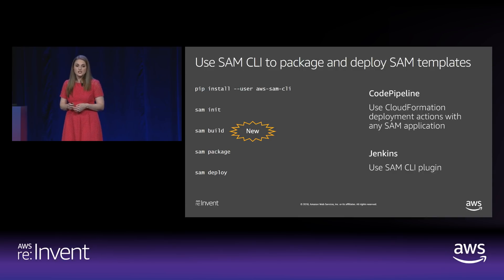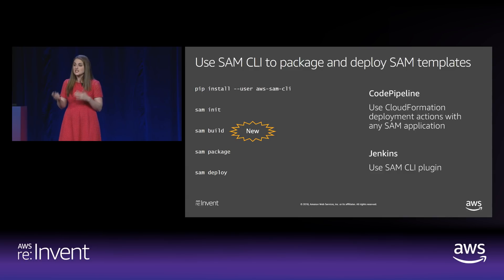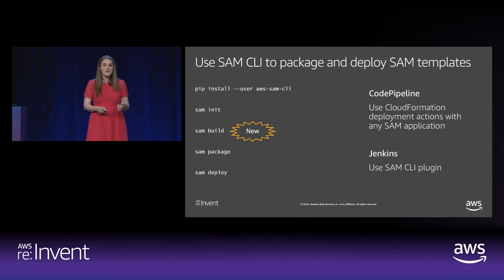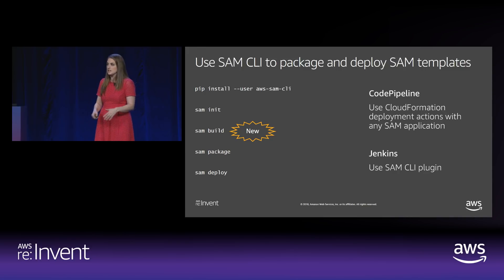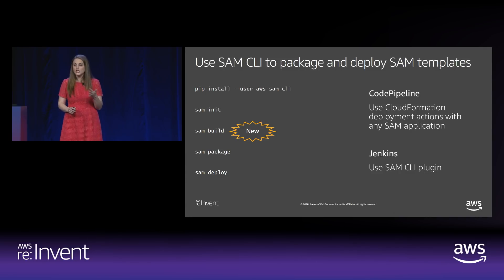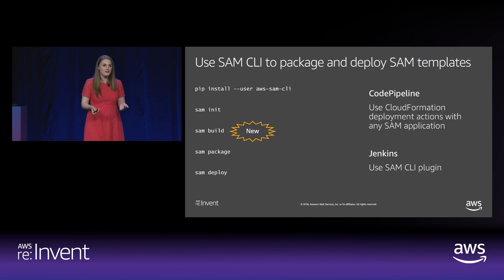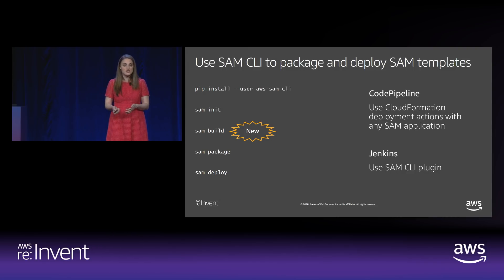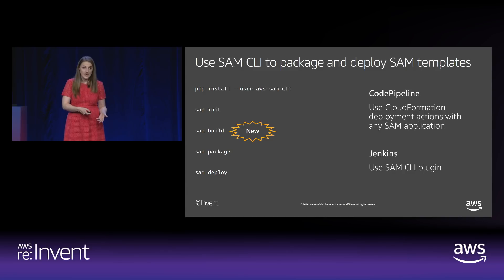You can use the SAM CLI to package and deploy SAM templates. Last week we launched the SAM build command — especially great for Python Lambda function users. It makes sure that if you have any native dependencies or native extensions, they're built against the exact right versions of libraries for the Lambda function environment, making it a great way to package Python functions. Then you use SAM package or SAM deploy. In CodePipeline, SAM package and SAM deploy are wrappers around CloudFormation change sets, so you'd still use the CloudFormation actions in CodePipeline with any SAM application. In Jenkins, it's easy to use the SAM CLI plugin for Jenkins to deploy to Lambda with serverless applications.